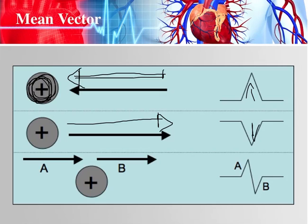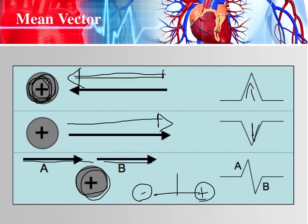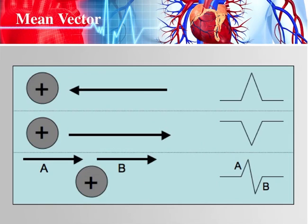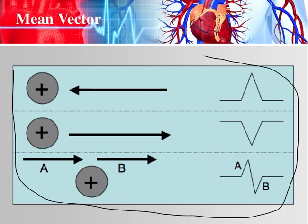If the mean vector is perpendicular to the positive electrode — think of an upside-down T, where the lead is one line and the wave of depolarization is the other — that gives you an equiphasic QRS complex. If it's some combination of these, you get a biphasic complex that's more positive on one side and more negative on the other. That's the intuition behind how we get those squiggly lines on the EKG paper.